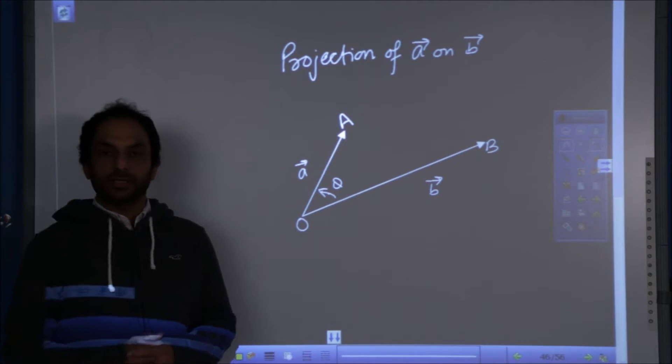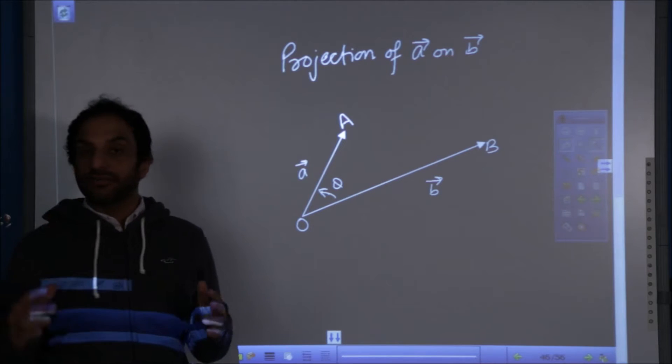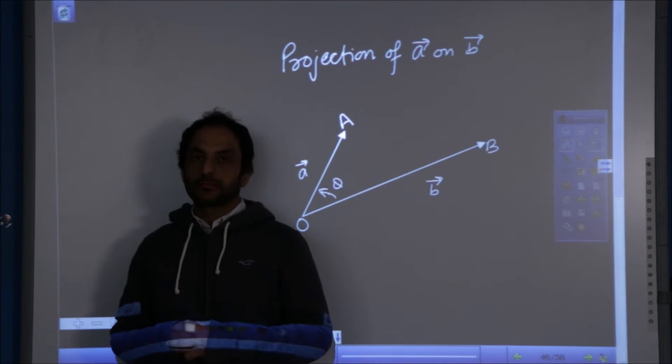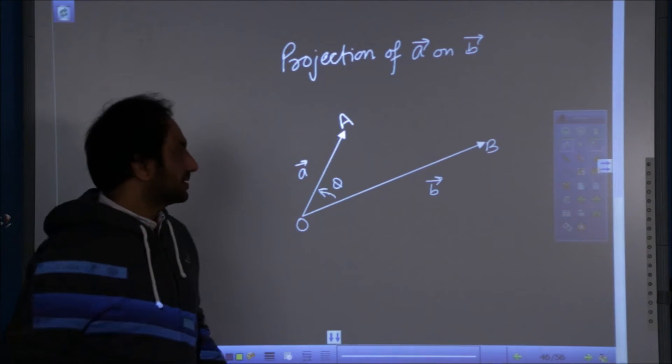Projection of A on B, projection of one vector on the other, very important concept in vectors.